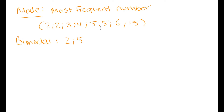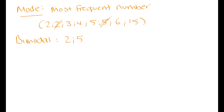If we did not have the second 5, then 2 would be the only mode. And if each number occurred only once, the data set would have no mode. So a data set can have no mode, one mode, or multiple modes — it just depends on which number or numbers occur most frequently. Those are the three methods to describe the central tendency of a data set.